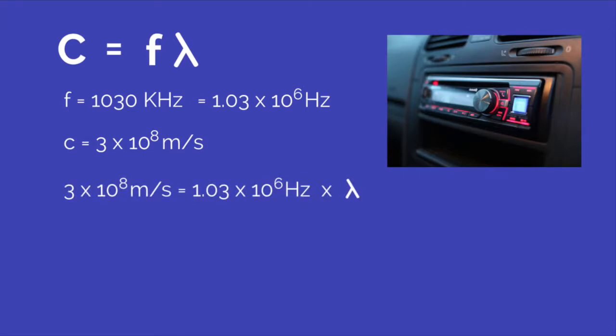Let's calculate the wavelength of a local Boston AM radio station, WBZ, which has a transmission frequency of 1030 kilohertz. Using scientific notation, we can write that as 1.03 times 10 to the sixth hertz. The speed of light in scientific notation is 3 times 10 to the eighth meters per second. So filling in our equation, C equals frequency times wavelength, we write 3 times 10 to the eighth meters per second equals 1.03 times 10 to the sixth hertz times lambda.